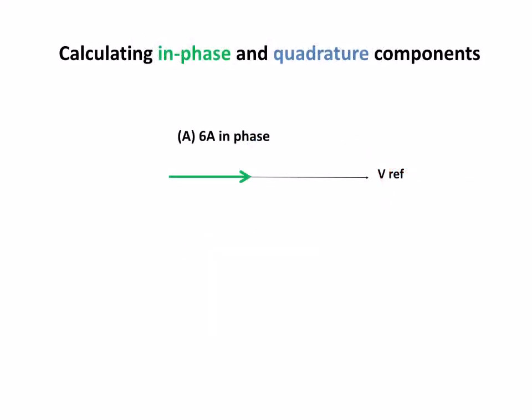The first one is our 6 amps in phase. What we're going to do is find out the in-phase value and the quadrature component. When we looked at vectors we talked about horizontal for in-phase and vertical which will now be our quadrature component.